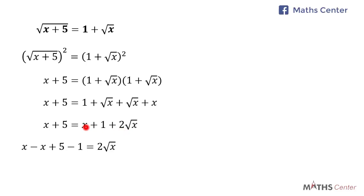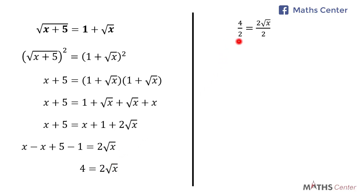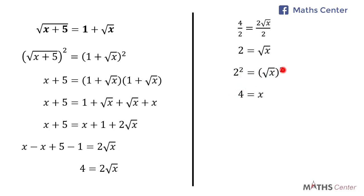I'll send 1 and x over to the left hand side. When I do that I have x minus x plus 5 minus 1 equal to 2 root x. x minus x is 0, and 5 minus 1 is 4, so we have 4 equals 2 root x. Dividing both sides by 2 gives 2 equals square root of x. Squaring both sides: 2 squared equals 4, and square root of x squared gives us x. So x is equal to 4.